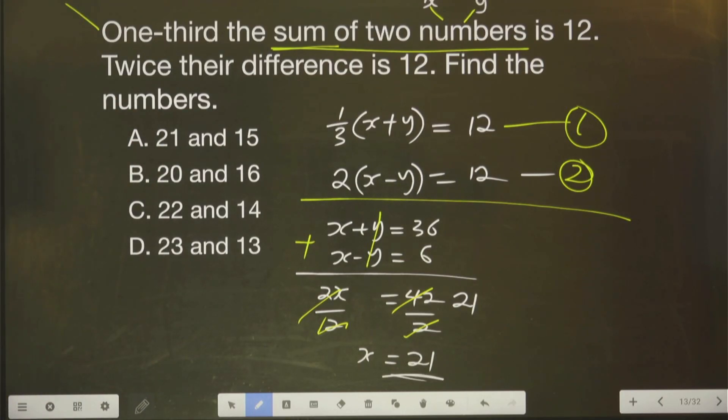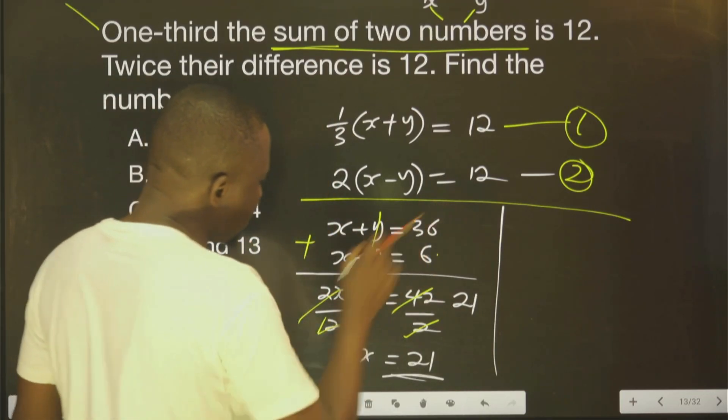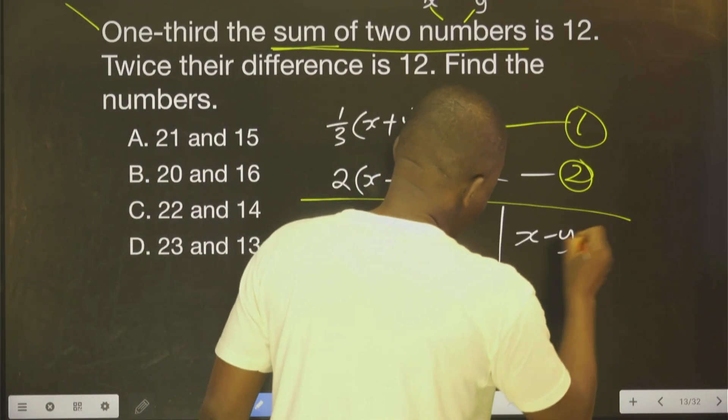Now we have the value of one of them. The next is to get the second one. To get the second one, you can use any of this. I can use this second one. I say S minus Y equals 6.